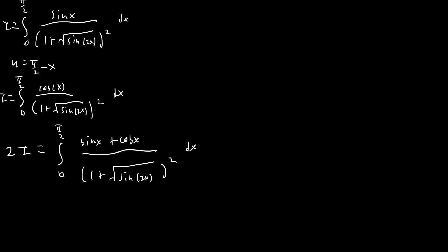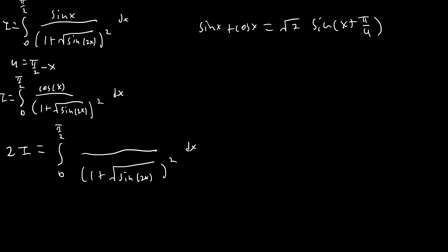Now we're going to use an incredibly powerful identity: sine of x plus cosine of x equals square root 2 times sine of x plus pi over 4. The reason we use that here is it means we can combine the numerator. We then shift our integral over a little bit, replacing with just sine of x, and we'll be dividing by square root 2.